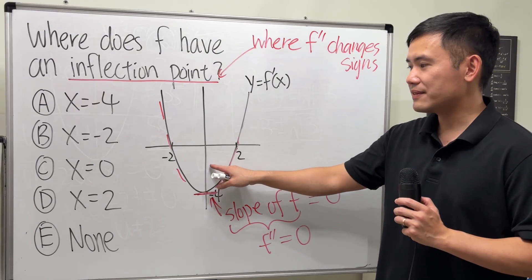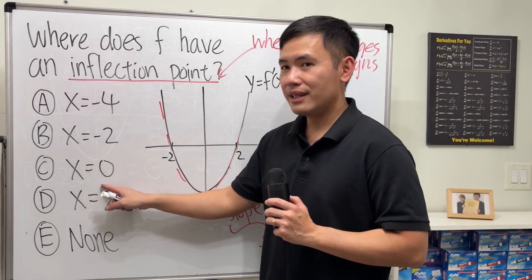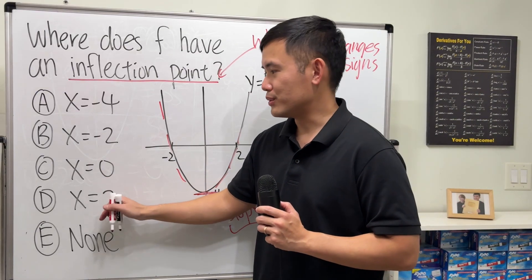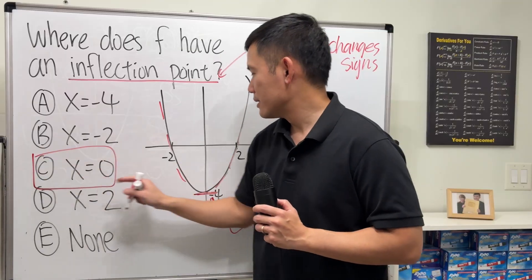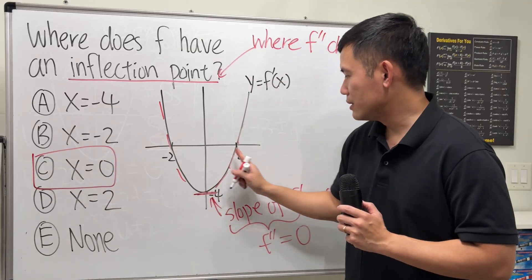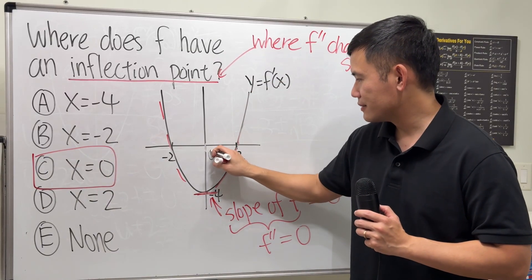That x value is when x is equal to 0. So this is negative 2, this is 2, and this right here is 0. That's the answer.